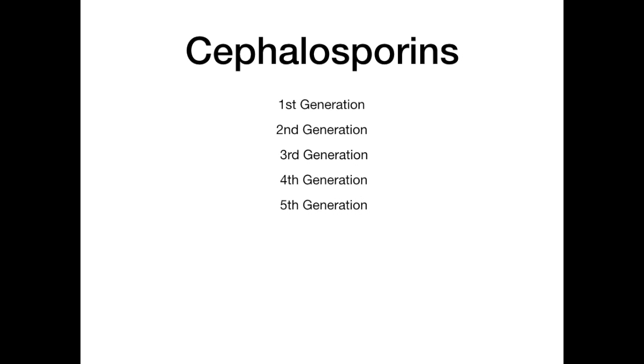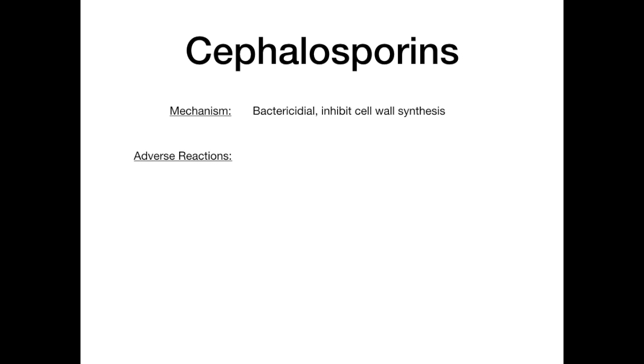Before we categorize the generations, let's do a brief overview of this class of antibiotics. Cephalosporins are very closely related to the penicillins. The mechanism for all of them, regardless of which generation, is that they inhibit cell wall synthesis in a bactericidal manner — meaning they're actually killing the bacteria.